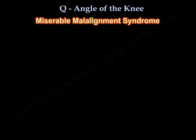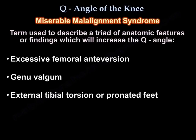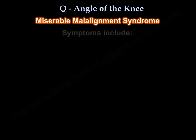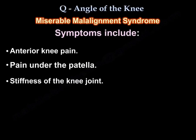What is the miserable malalignment syndrome? It is a term used to describe a triad of anatomic features: excessive femoral anteversion, genu valgum, and external tibial torsion or pronated feet. Symptoms of the miserable malalignment syndrome include anterior knee pain, pain under the patella, or stiffness of the knee joint.